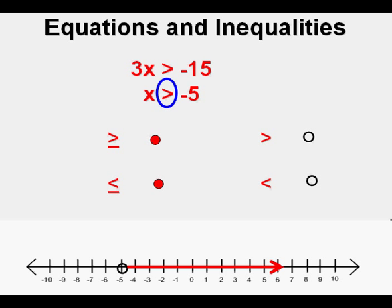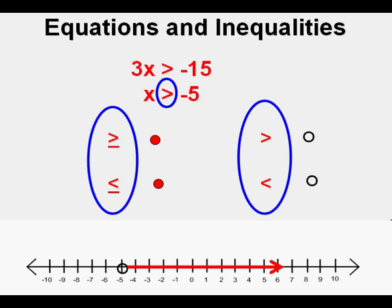What direction do you draw the arrow? When you have the unknown on the left, look at the symbol as the tip of the arrow. Whatever the direction of the arrow on the symbol, that's the direction of the arrow from the point or open circle that you will draw.